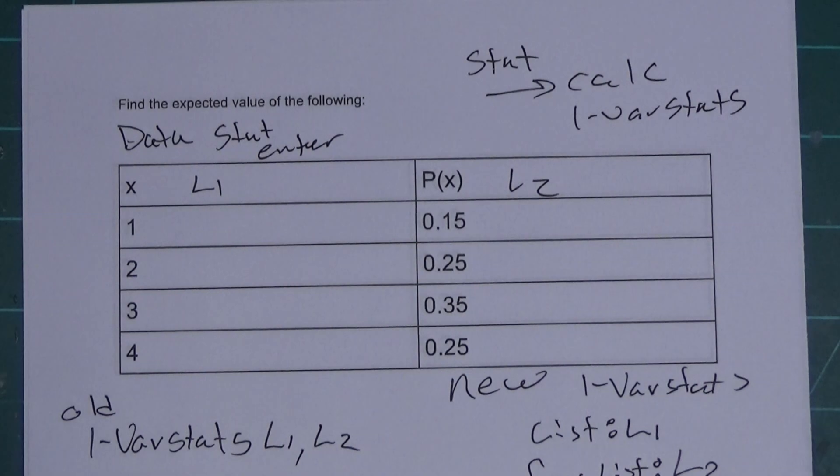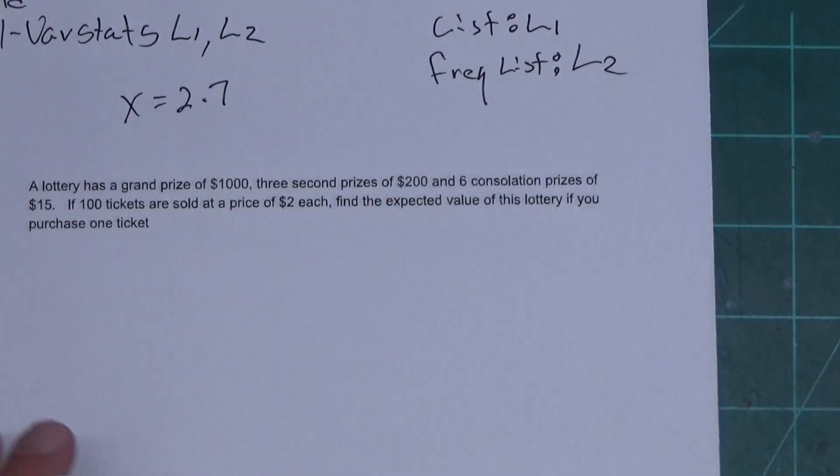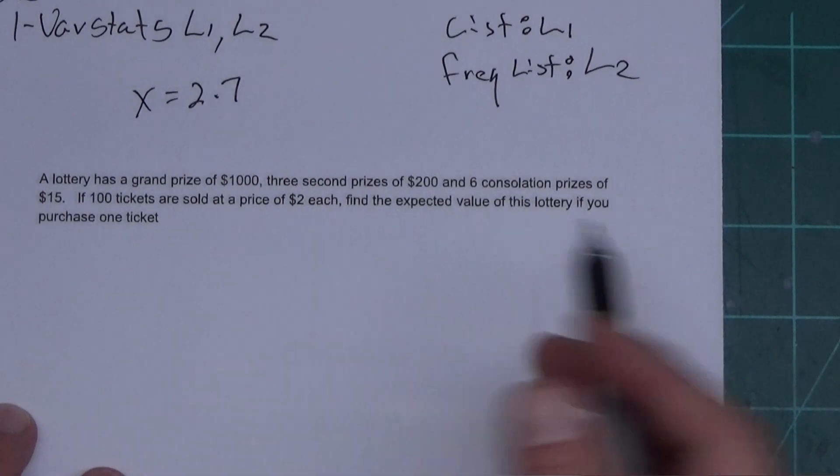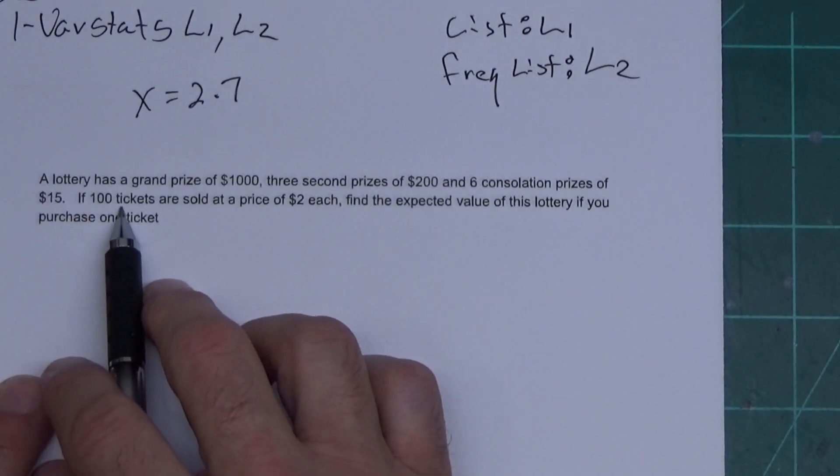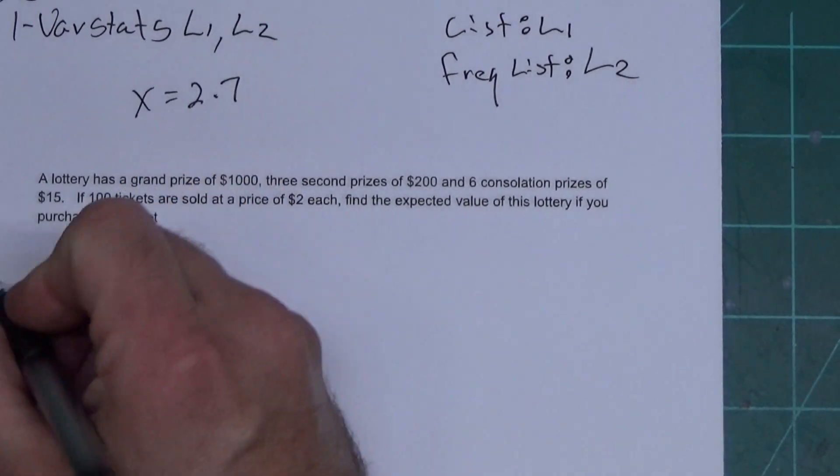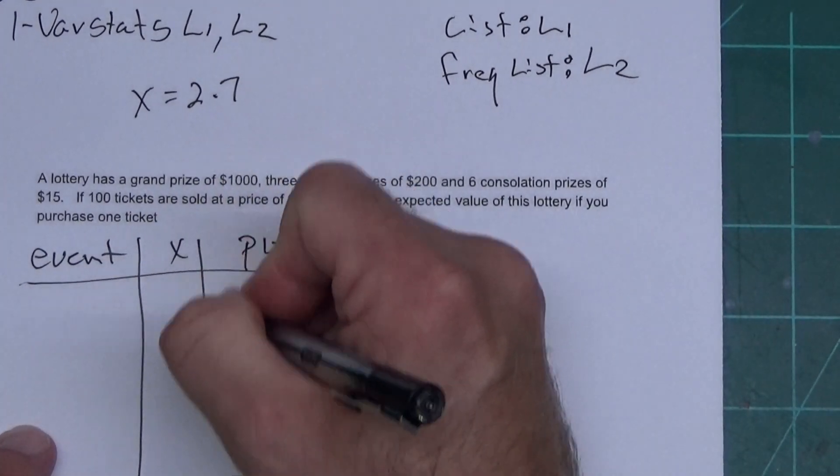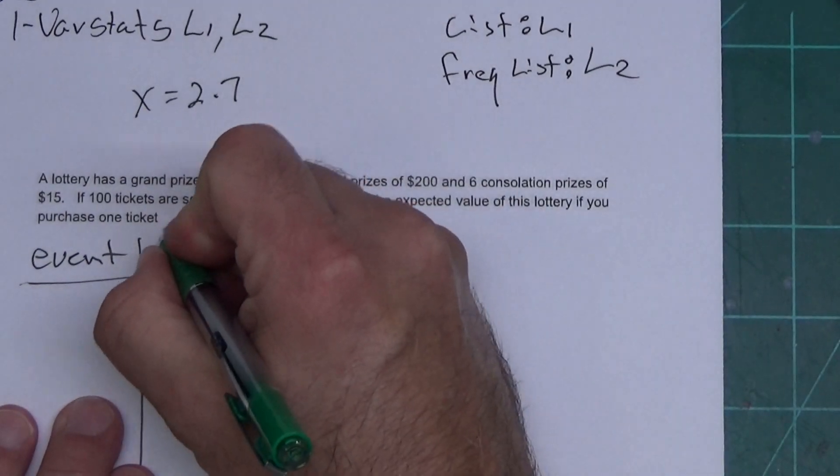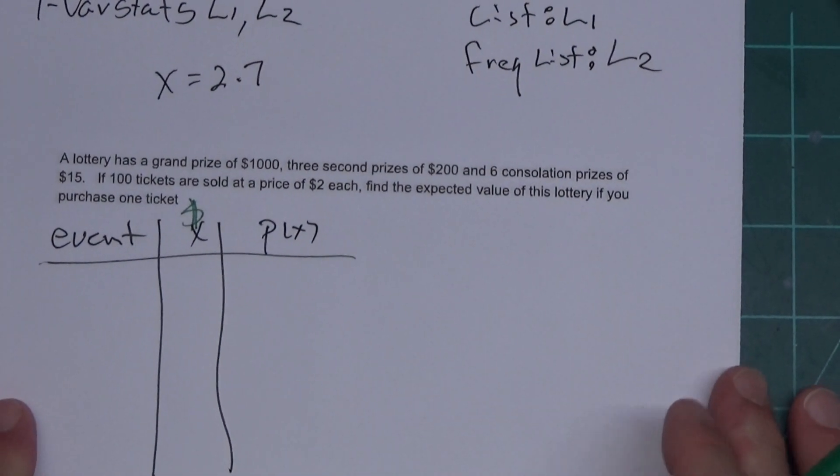Let's do kind of a real-life application of this. I'll go ahead and use the pretty calculator for this one. Now, for real-life applications, you have to draw out the table first. You're not given the table. And like always, these documents in the videos are in the video description. There's a link to them, so you can open this up, print it, and work with me. A lottery has a grand prize of $1,000, 3 second prizes of $200, 6 consolation prizes of $15. If 100 tickets are sold at a price of $2 each, find the expected value of this lottery if you purchase one ticket. So, I'm going to have to set up a table. I'm going to do Event, X, and P(X). I need this table.